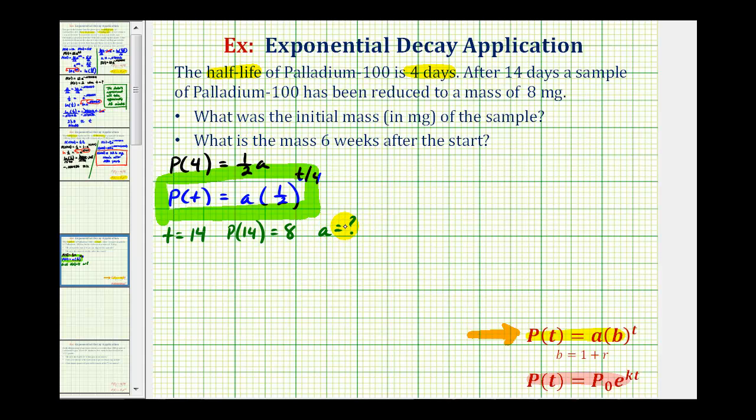So if we perform these substitutions into our exponential function, we would have the equation eight for P of 14 must equal a times one-half raised to the power of 14-fourths. And now we just need to solve this for a. Well, we should recognize that 14-fourths is equal to seven-halves.